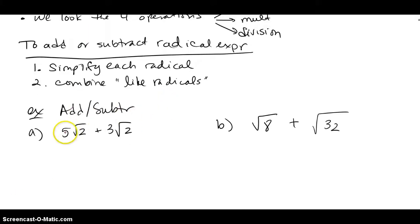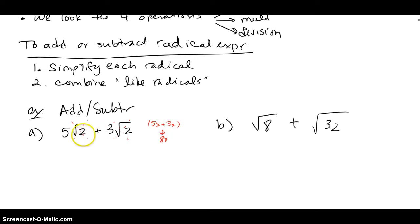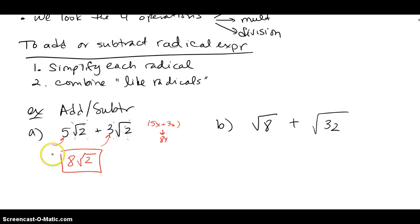For example, add or subtract: imagine √2 to be like a big X and imagine √2 to be like a big X, so this is kind of like 5X plus 3X which gives us 8X. I have 5 of these radicals and then 3 of them, so I have a total of 8√2 for this problem because there was nothing to simplify.